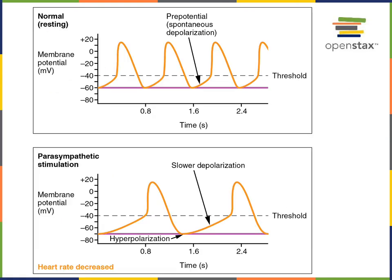Here we see a comparison of the auto-rhythmic cell action potential at rest versus with parasympathetic stimulation. Acetylcholine released from postganglionic parasympathetic fibers stimulates opening of potassium channels and inhibits opening of HCN channels, causing a slower rate of depolarization during the pacemaker potential. This decreased slope means it takes longer for the membrane potential to reach threshold, so action potentials are generated at a lower frequency, leading to a decrease in heart rate.